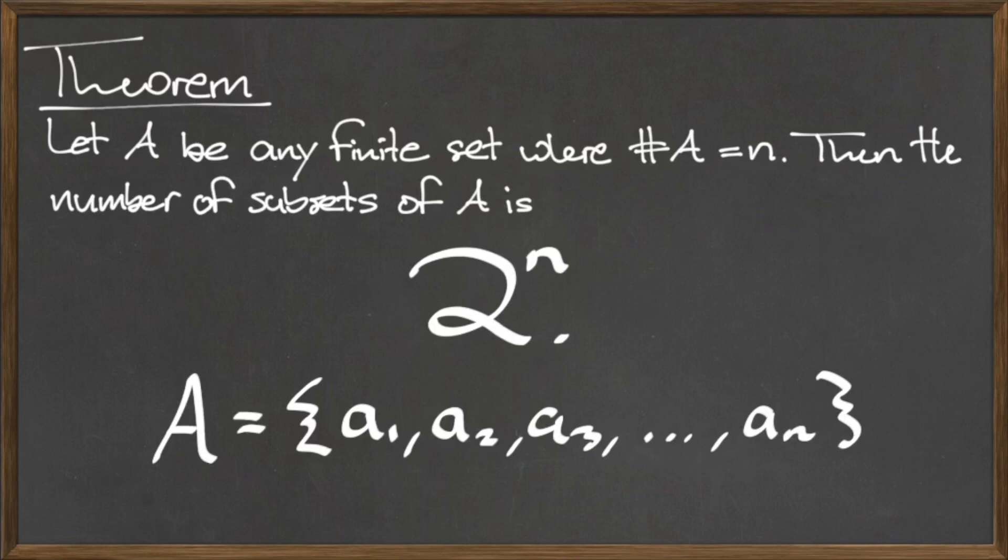For each element in our set, we ask ourselves the yes or no question, do we want this particular element in our subset or not? Since there are 2 possible outcomes for this question, and there are n elements in our set for which we need to ask the question, then there are exactly 2 to the n possible combinations, which result in the 2 to the n possible subsets of A.